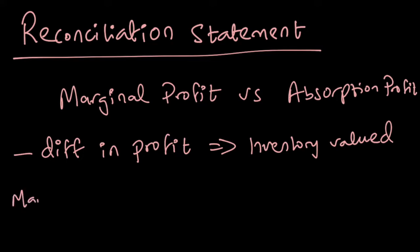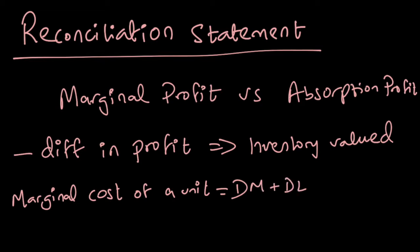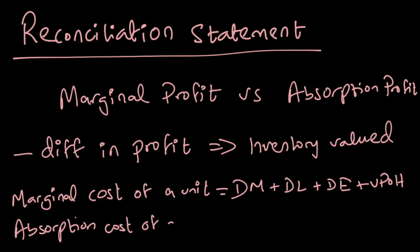The marginal cost of a unit is made up of variable manufacturing costs: direct material, direct labor, direct expense, and variable production overhead. The absorption cost of a unit differs by one component — it is the marginal cost plus fixed production overhead. That one additional cost is included under absorption costing but not under marginal costing.